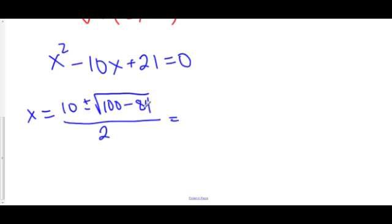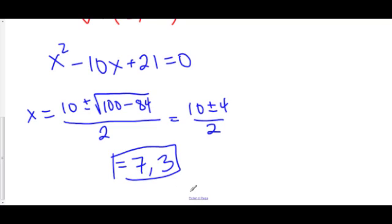100 minus 84 is 16. The square root of 16 is 4. So here we have 10 plus or minus 4 all over 2. And this is equal to 10 plus 4 over 2. 10 plus 4 is 14 over 2 is 7. Or 10 minus 4 is 6 over 2 gives us positive 3. So once again, our zeros are at 7 and 3.